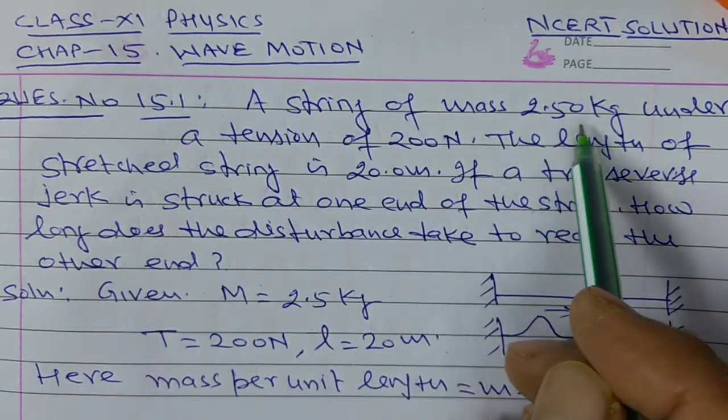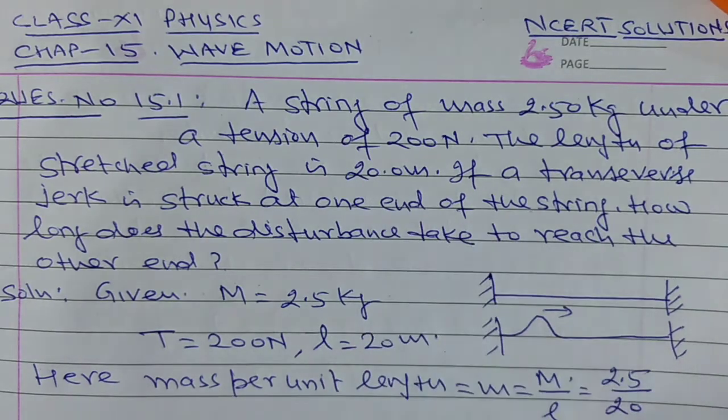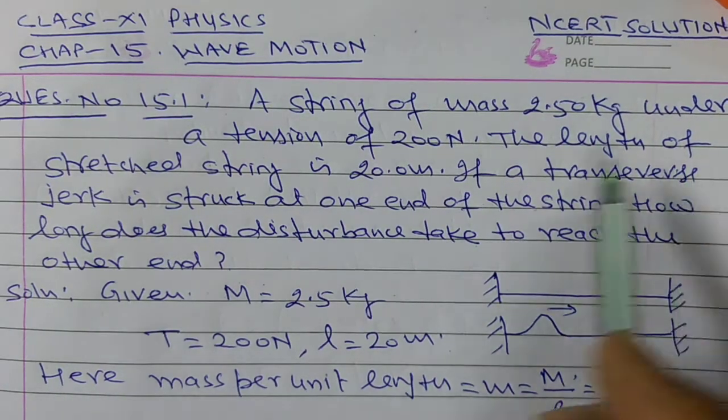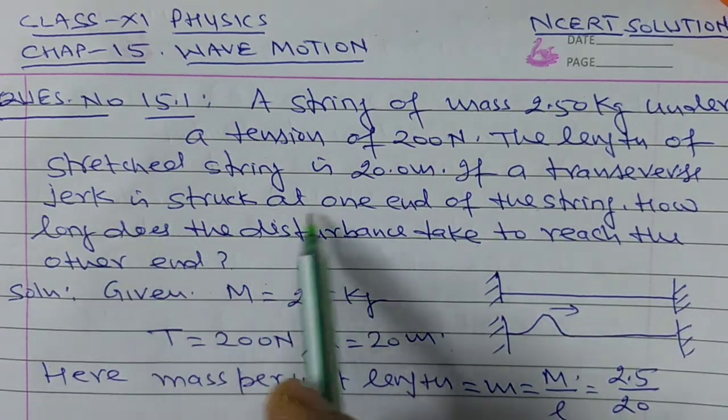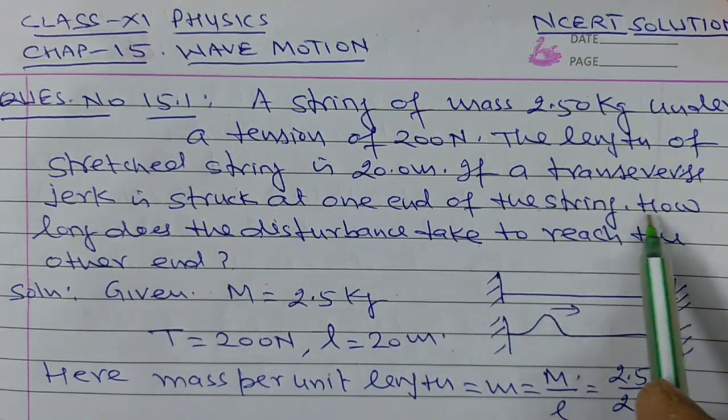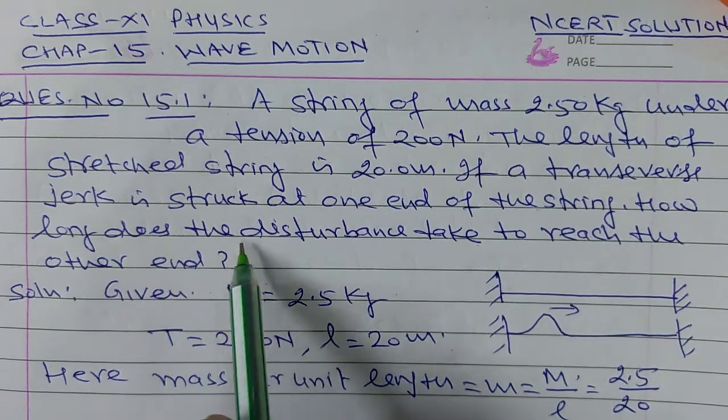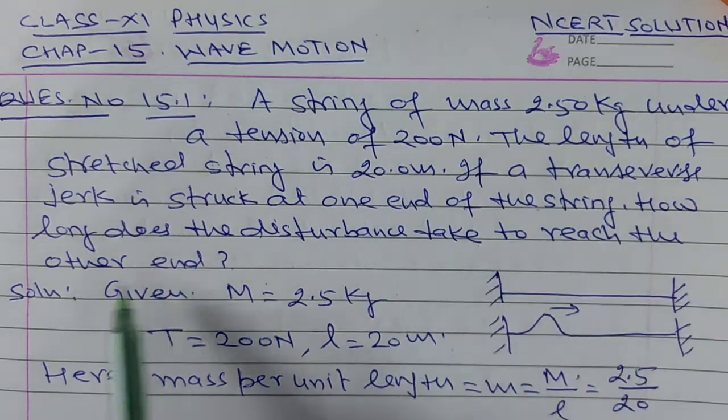A string of mass 2.5 kg under a tension of 200 N, the length of the stretched string is 20 m. If a transverse jerk is struck at one end of the string, how long does the disturbance take to reach the other end?